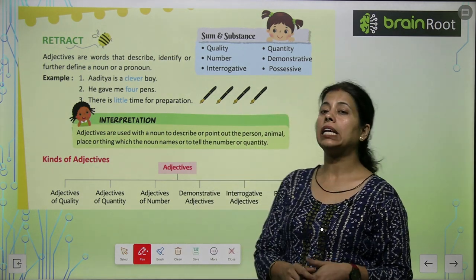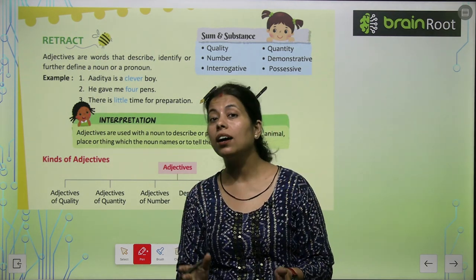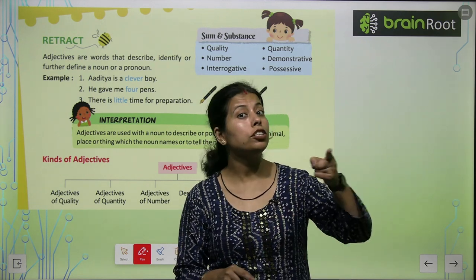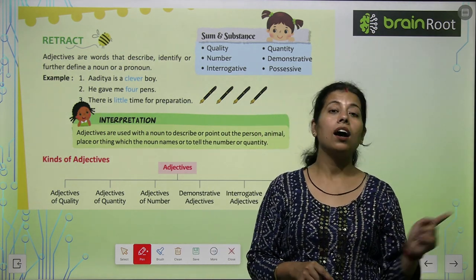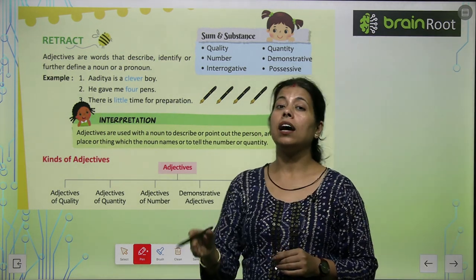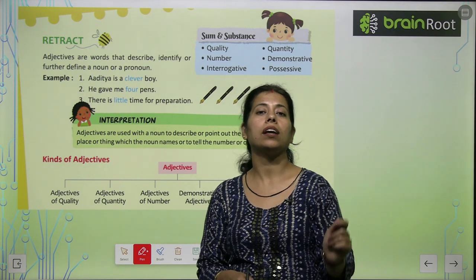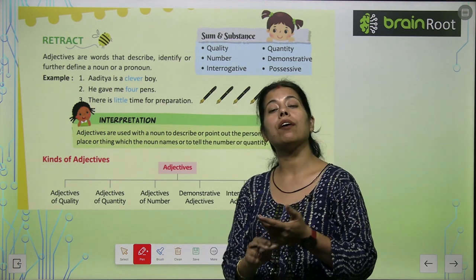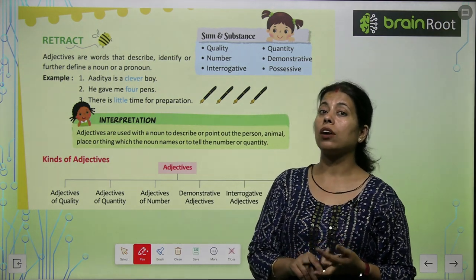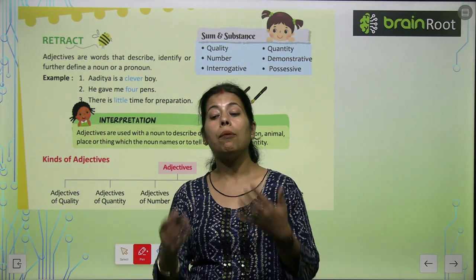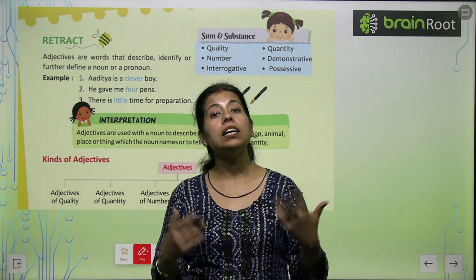वो कौन से होते हैं? He is a very smart boy. She is a very naughty boy. And she is a very beautiful girl. Look at the tall boy. तो जो यहाँ पर boy और girl को describe करने के लिए beautiful, clever, naughty, tall, young — all these words are called adjectives. उनको हमने further define करा है, noun को further define करा है।